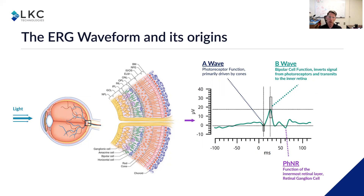So you can get all that information from an ERG waveform, from the photoreceptors to the retinal ganglion cells. An attenuated response like this could reflect some disease state.